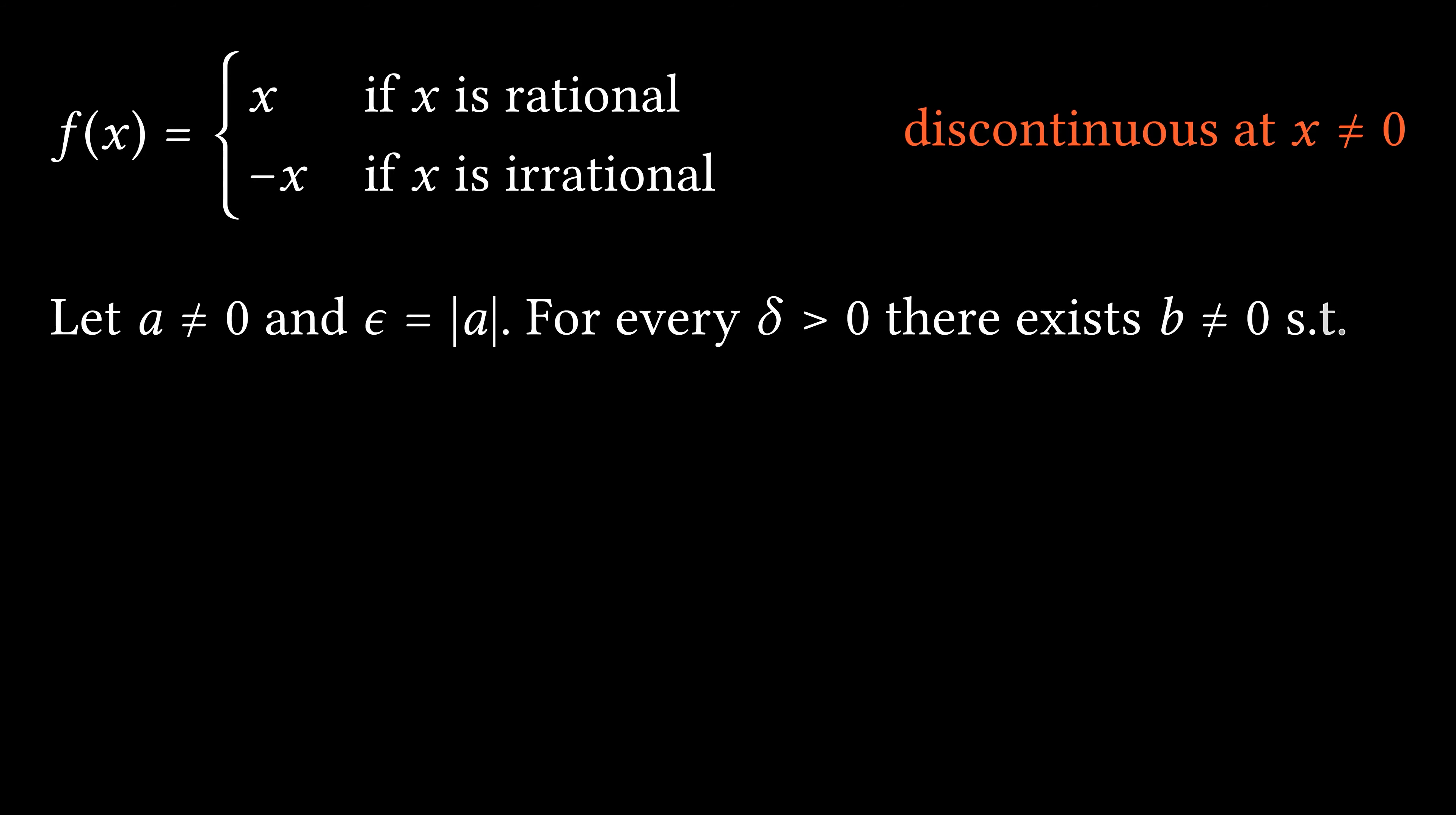Then for any positive delta, there exists a non-zero real number B such that B is within delta distance of A, and the values of the function at A and B have different signs. For example, if A is rational, then we can take B to be an arbitrarily close irrational number.